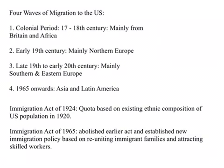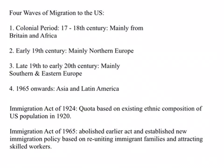The US is called the country of immigrants. Let us briefly look at the different waves of people coming to the US and where they came from. In the initial colonial period — the 17th and 18th century — most people who came to the US were from Britain and Africa. Then, as the US started to industrialize, a number of people moved from Northern Europe: Scandinavian countries like Sweden, Ireland, Iceland, and other Northern European countries.